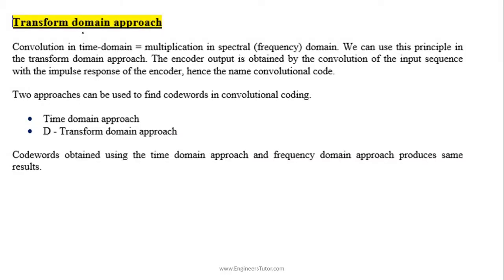In this lecture I will explain the transform domain approach to obtain the output of a given convolutional encoder. From signals and systems we are familiar with this concept: convolution in the time domain is equivalent to multiplication in the spectral or frequency domain. We use this principle to obtain the output of the encoder in the transform domain approach.